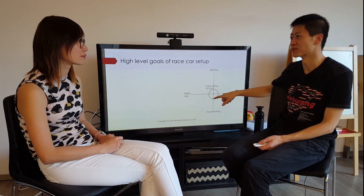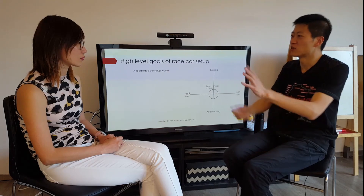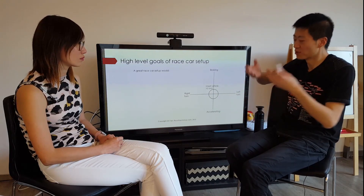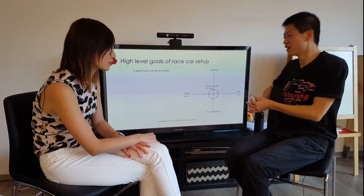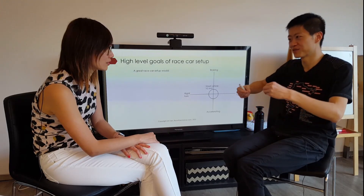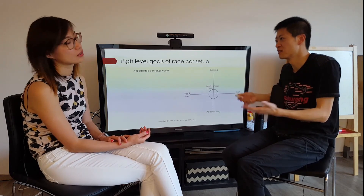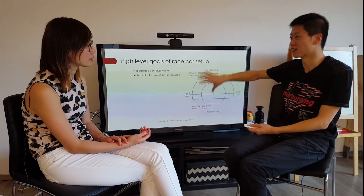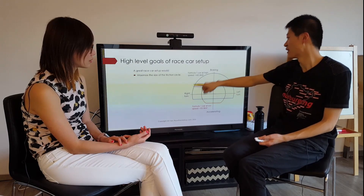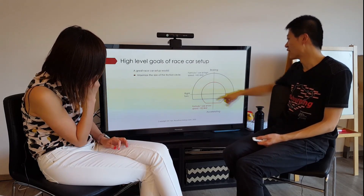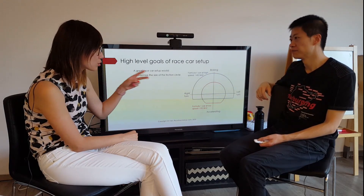The high-level goal of race car setup is to make this circle as big as possible. For a typical street vehicle we have a 1g limit — g being gravity, roughly 10 meters per second squared. For race cars you want to make it as big as possible. This inner circle is a typical street vehicle; this larger one would be, for example, a Formula One car at low speed. At high speed there's aerodynamic downforce which adds additional load, making the circle even larger.